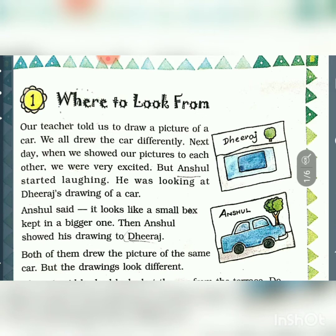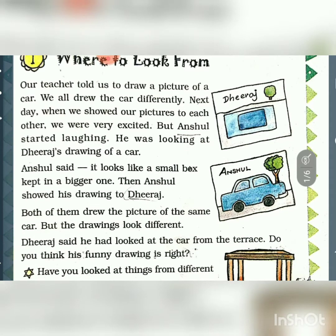A teacher told all the students to draw a picture of a car. All the students drew differently. There are two people named Dheeraj and Anshul. Anshul started looking at Dheeraj's drawing of a car and said it looks like a small box kept on a bigger one. Then Anshul showed his drawing to Dheeraj. Both of them drew the same car, but the drawings look different.